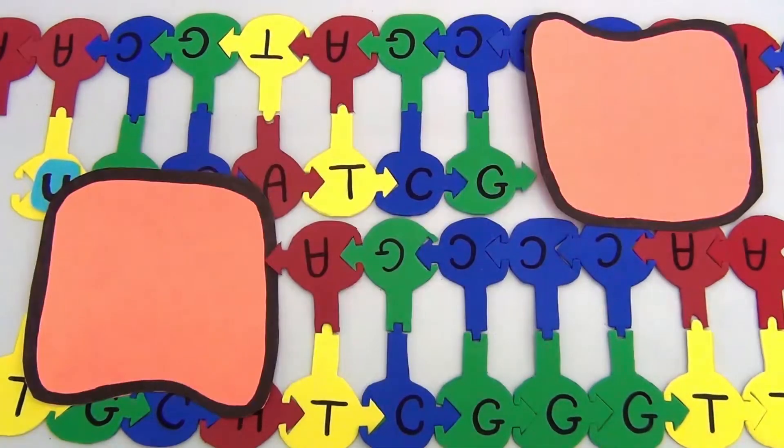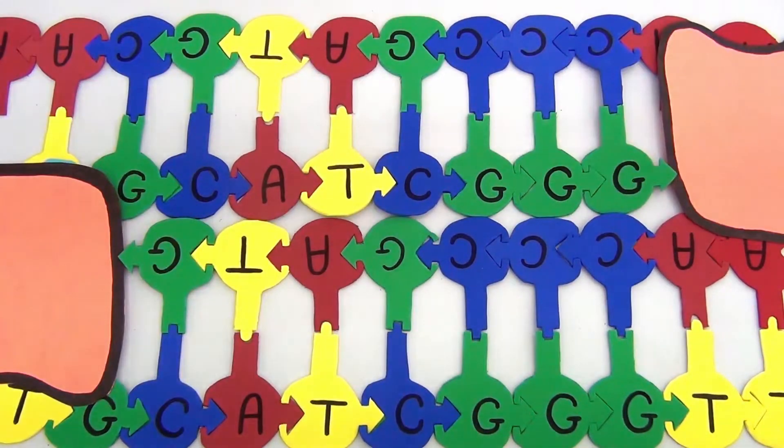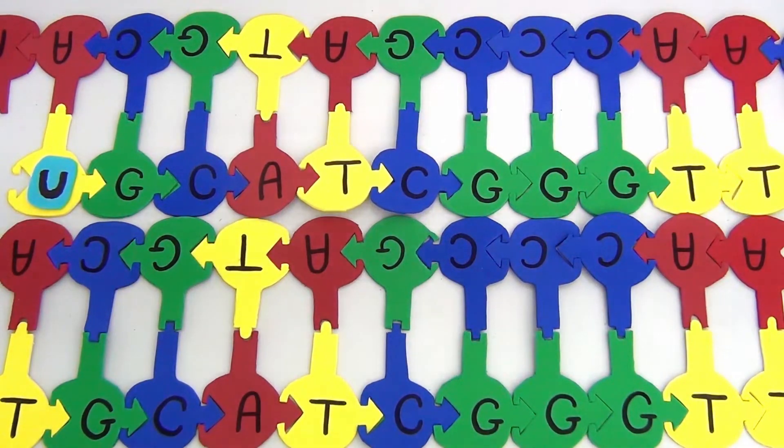If there is a cytosine, it will add a complementary guanine nucleotide. If there's an adenine, a complementary thymine, and so on, building the new molecule of DNA.